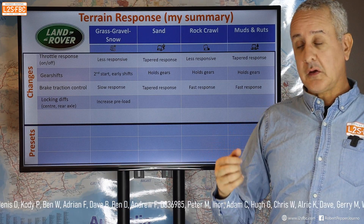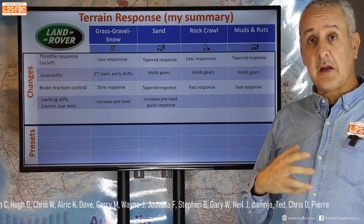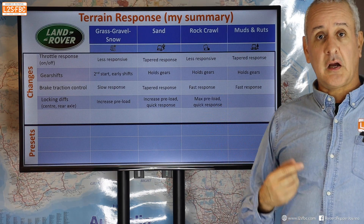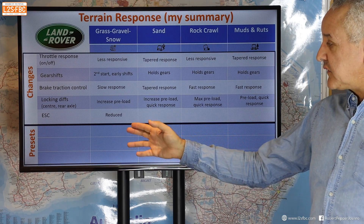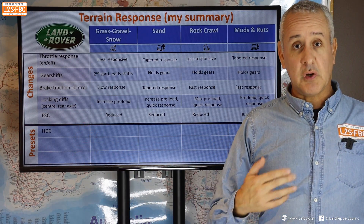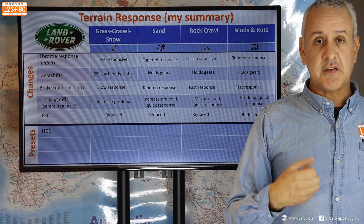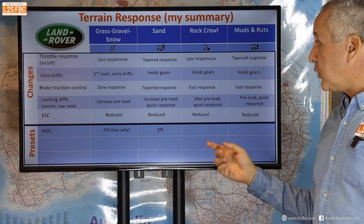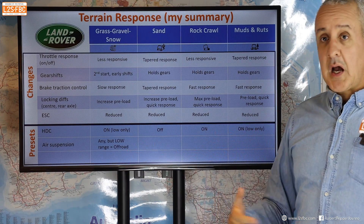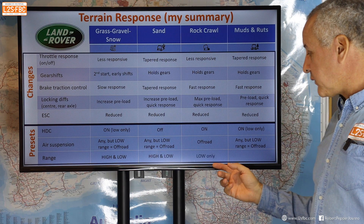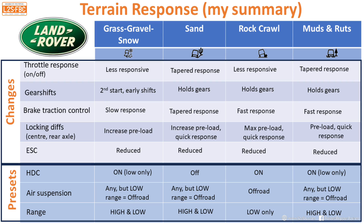For locking diffs, the center differential preload increases for grass/gravel/snow, and increases further for sand — with a quick response since things happen at high speed in sand. Rock crawl gets maximum preload and quick response, because you really want everything locked up. ESC is reduced across all off-road modes, and you may need to reduce it even further or turn it off on Land Rovers. Hill descent control is on for grass/gravel/snow but off for sand, because the resistance of the sand does the work for you. Air suspension height is also adjusted per mode, and rock crawl can only be selected in low range.